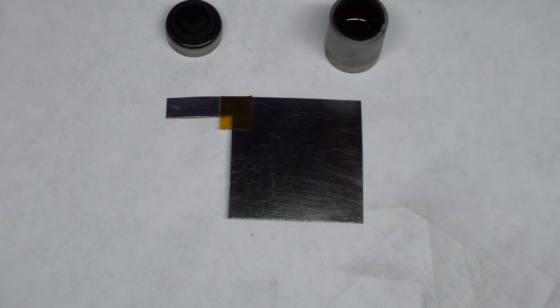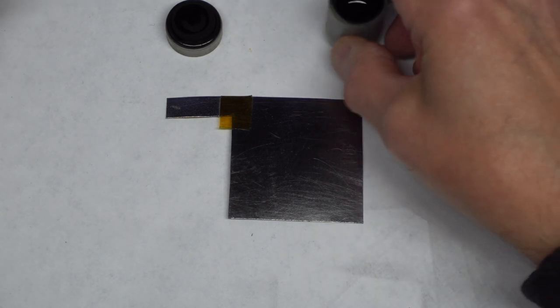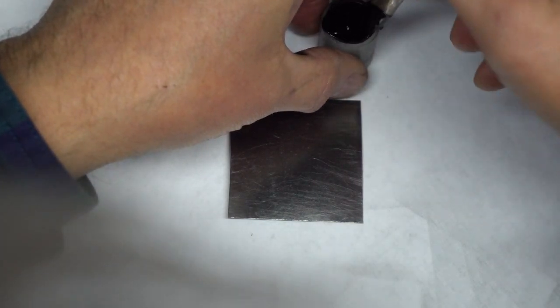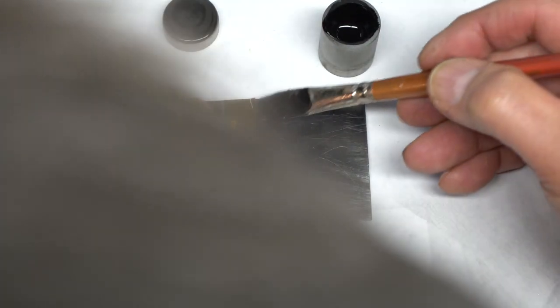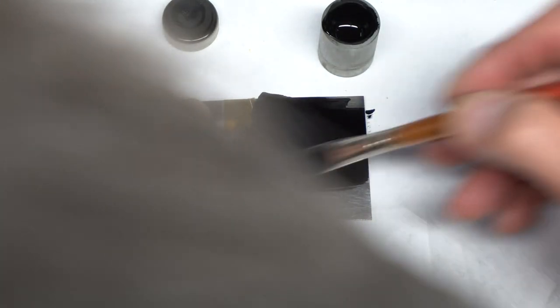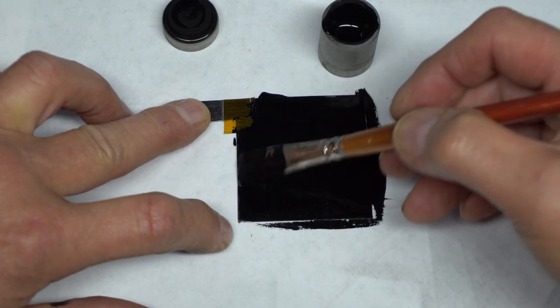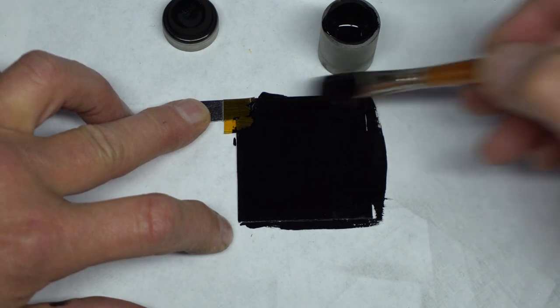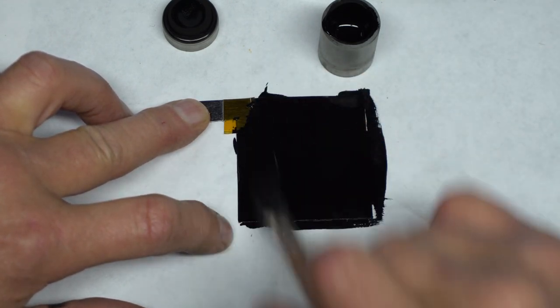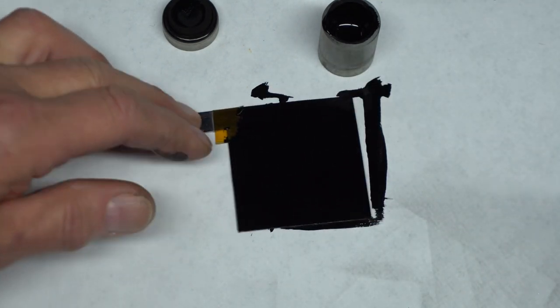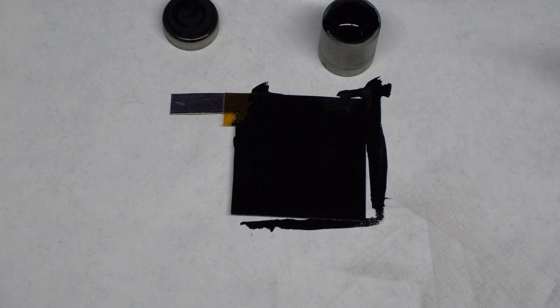Once it is well mixed, I just paint it on with a flat wide brush, just like this. Now it's just left to dry. You can speed up the drying if you want by blowing with a hairdryer.